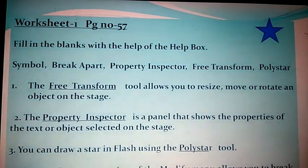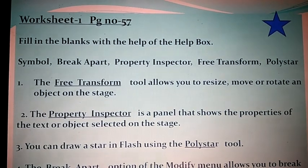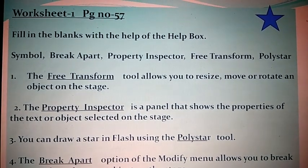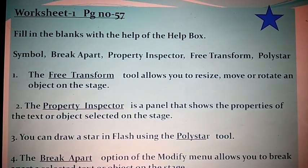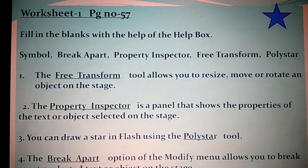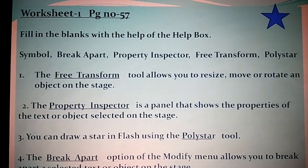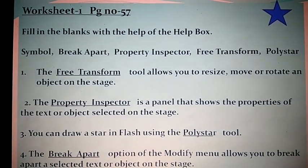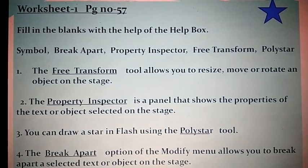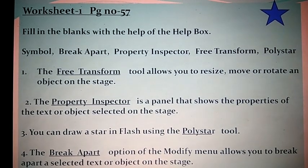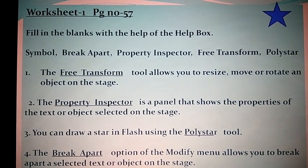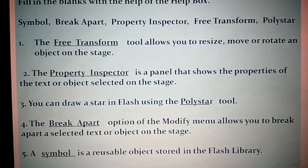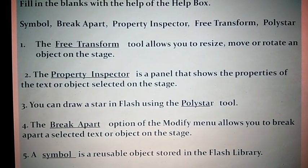Now worksheet number one — open your book to page 57, fill in the blanks using the help box: symbol, break apart, property inspector, free transform, and poly star. First: the free transform tool allows you to resize, move, or rotate an object on the stage. Second: the property inspector is a panel that shows the property of the text or object selected on the stage. Third: you can draw a star using the poly star tool. Fourth: the break apart option of the modify menu allows you to break apart a selected text or object. Fifth: a symbol is a reusable object stored in the flash library.